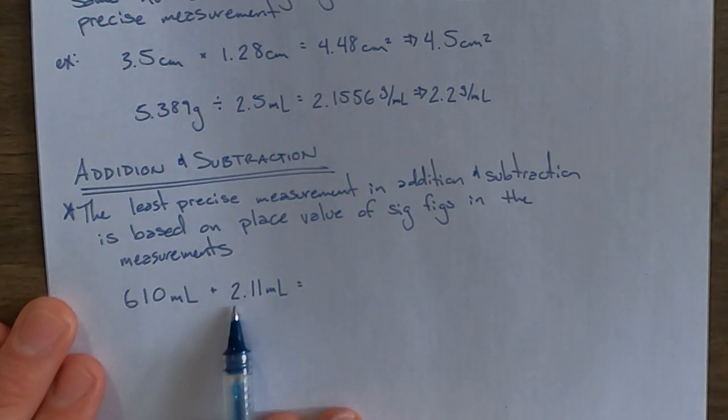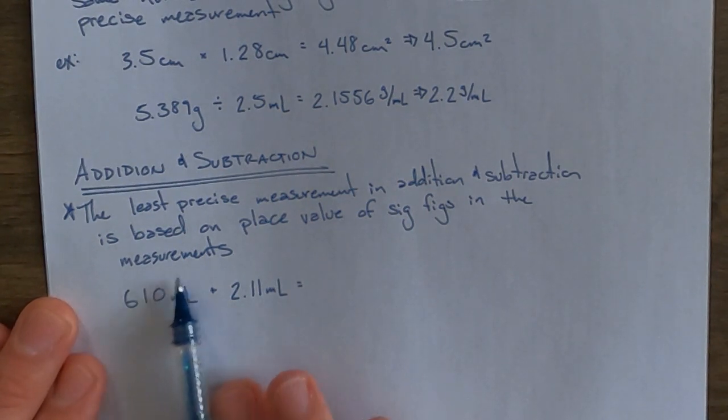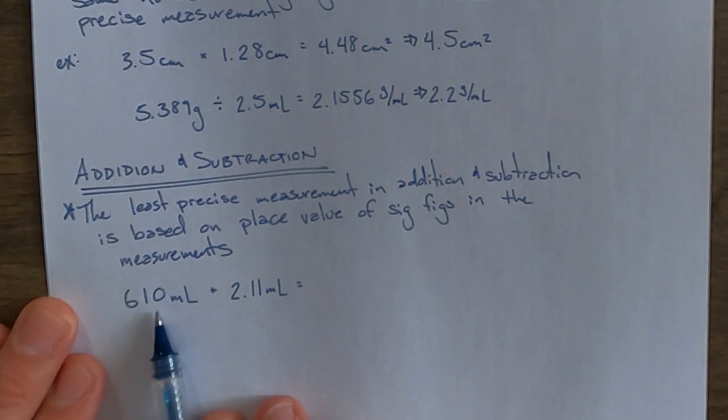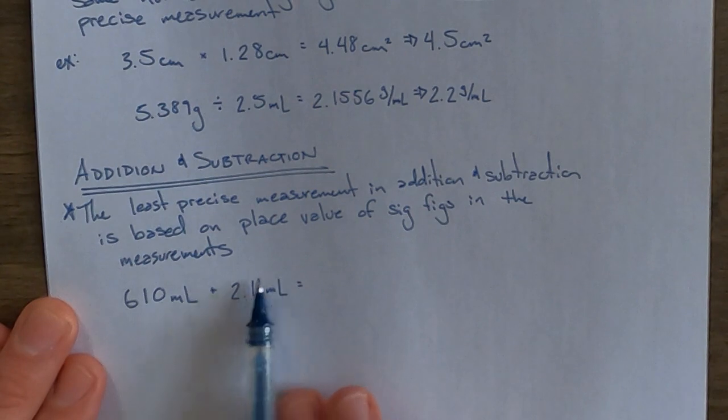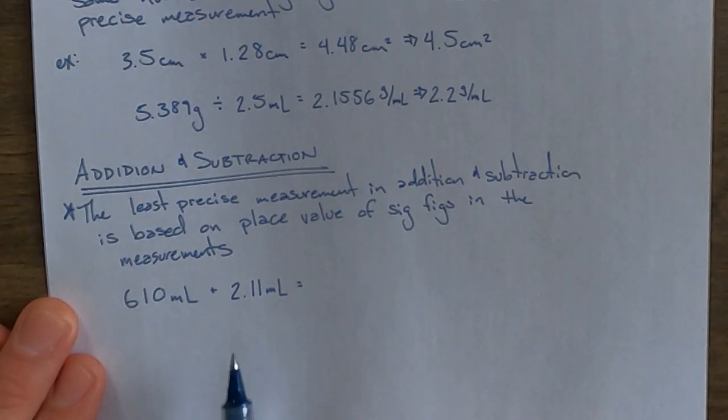But then here you've got a 50 milliliter burette and you're using it to drop 2.11 milliliters into this. If you were to do this in person, you would notice that the level of this water does not noticeably change. This small amount of water is not going to change this enough to change that estimated digit. So because of that, this small amount is not going to change this because it was only precise to the tens place.